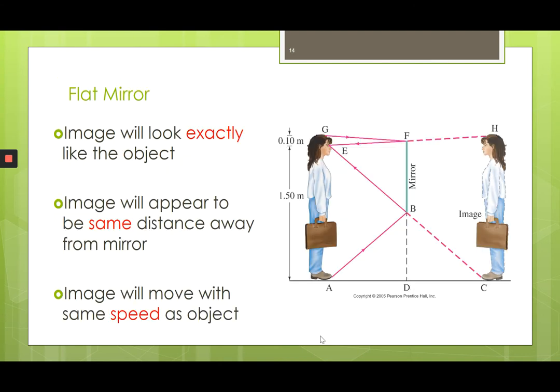Your image looks exactly like you and is the same distance from the mirror as you are. So if you are standing two meters from the mirror, your image is two meters from the mirror, which makes your image a total of four meters from you. Your image is also going to appear to move at the same speed you're moving.